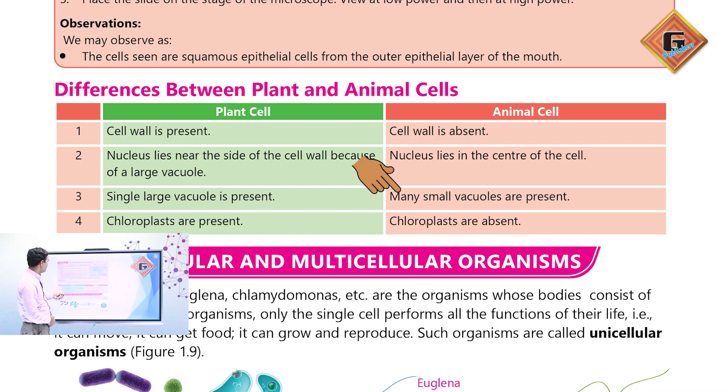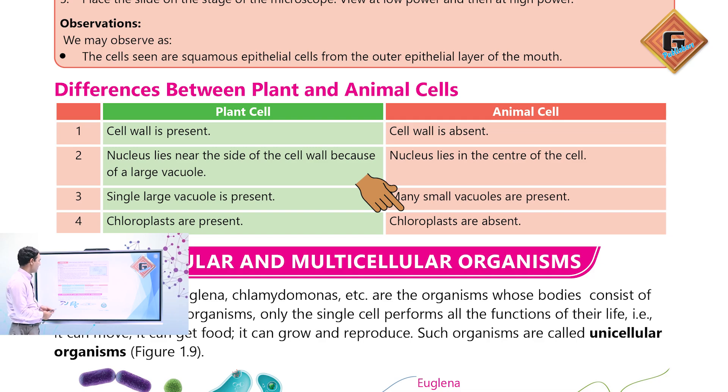In plant cells, chloroplasts are present. In animal cells, chloroplasts are absent. These are the key differences between plant and animal cells.